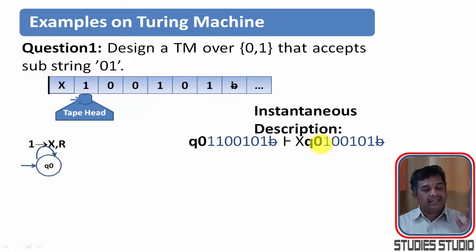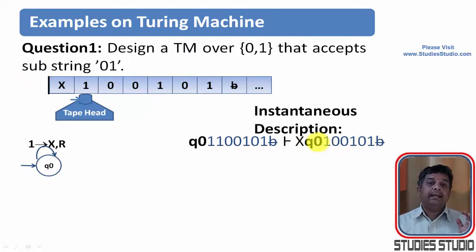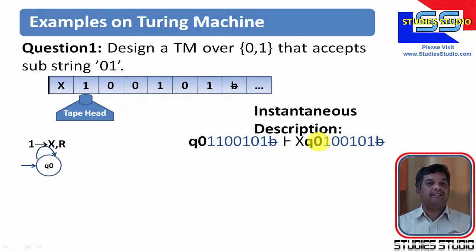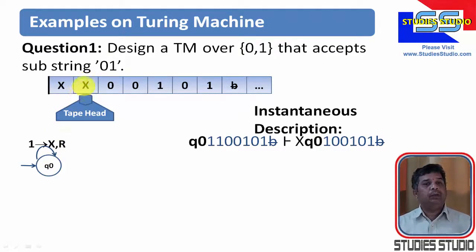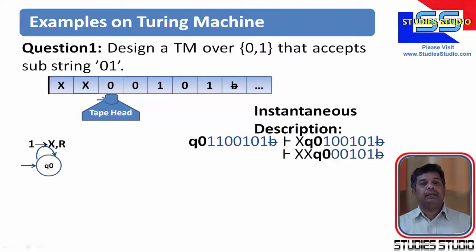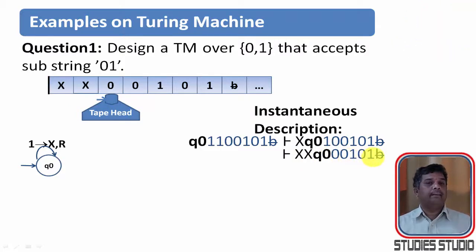We are in the same state q0 and 1, 0, 0, 1, 0, 1 need to be traversed. The next symbol we are having is 1. Again, we are going to write x onto the tape, staying in the same state, and move right. Now the instantaneous description will be: xx, q0, 0, 0, 1, 0, 1. The first 0 has now appeared.